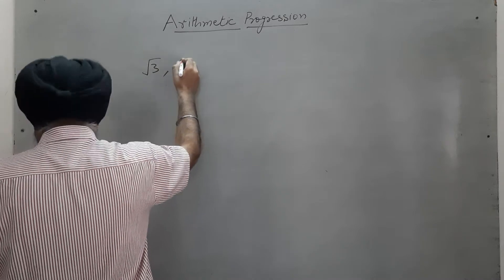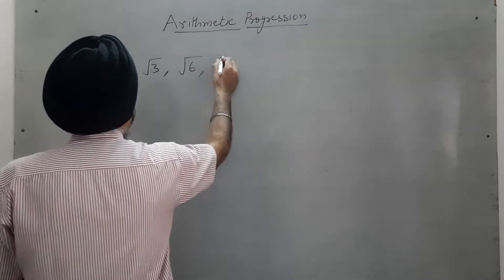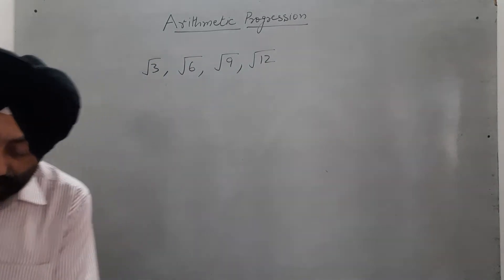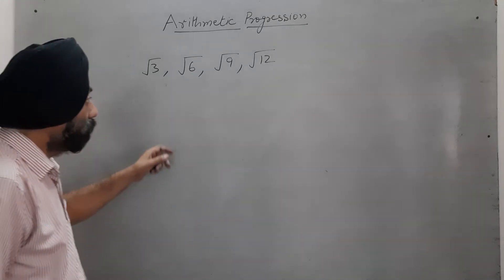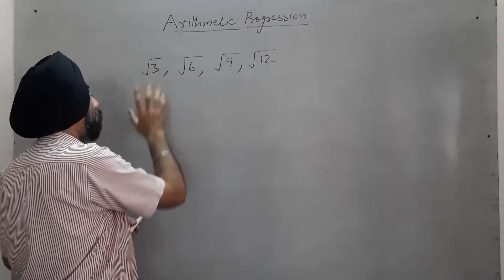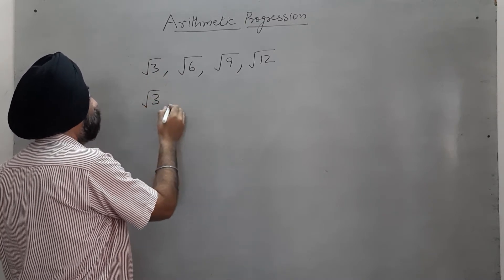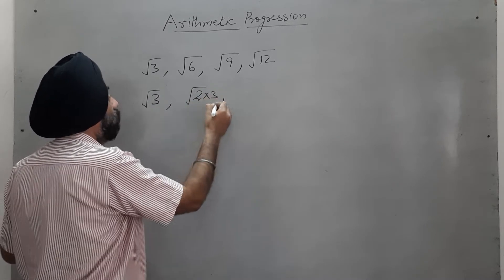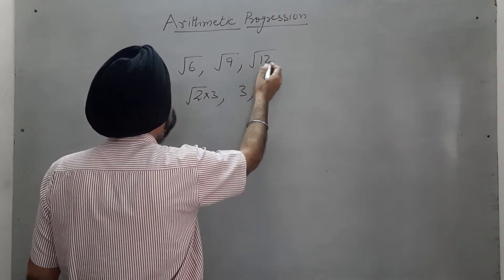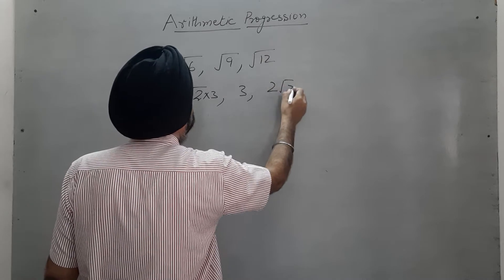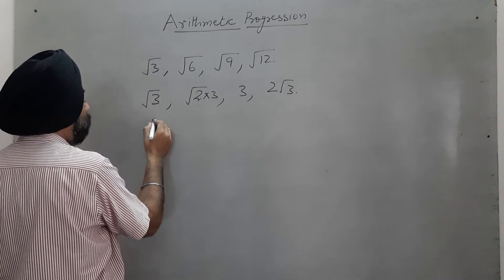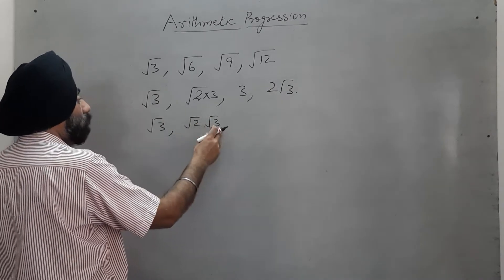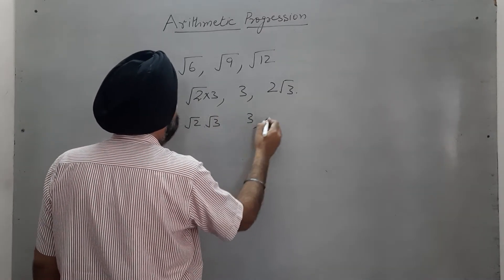Next example: check whether √3, √6, √9, √12 are in AP or not. I can simplify: √3 stays as √3, √6 is √(2×3) = √2·√3, √9 is 3 = √(4×3) = 2√3. So the terms simplify to √3, √2·√3, 3, and 2√3.